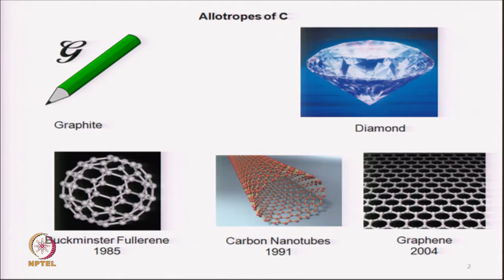Carbon comes in a variety of forms, some of them are listed here. The most important ones and the last three, as you can see from the years shown here, have been discovered very recently in the last 20 years or so. In particular, graphene is the latest one. We started our discussion with graphene because it is a two-dimensional simple structure, and we saw the structure of graphene in the last video.